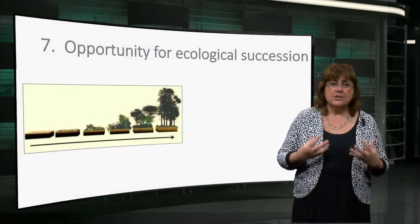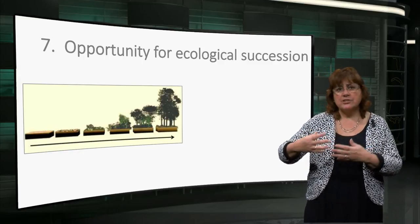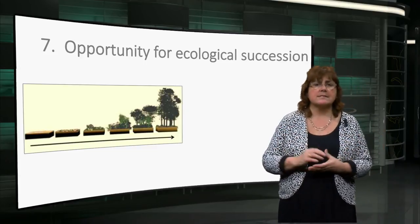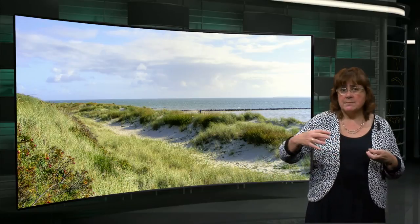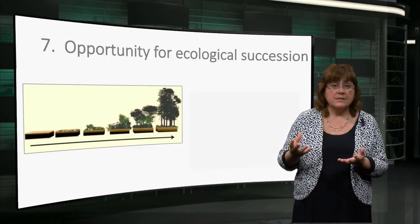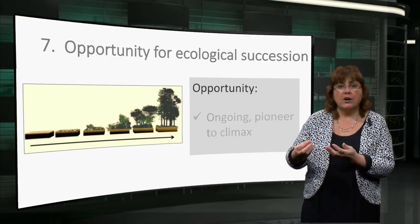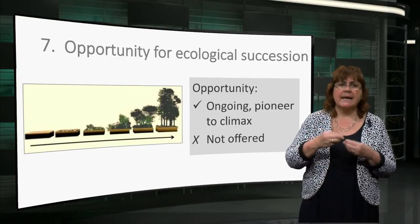The seventh principle is opportunity for ecological succession. Ecological succession is the natural change in species present in an ecosystem over time. For instance, pioneer plant species that grow on a newly forming dune are later replaced by secondary vegetation as the dune becomes more stable. And finally, the ecosystem achieves its climax state when tertiary vegetation such as woodland is fully established. Opportunities for the process of dynamic change should be ongoing and offered for each and every stage from pioneer to climax.